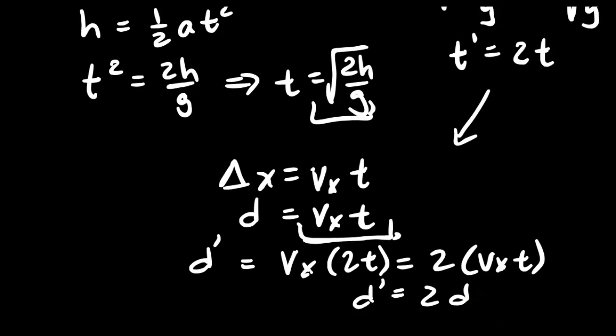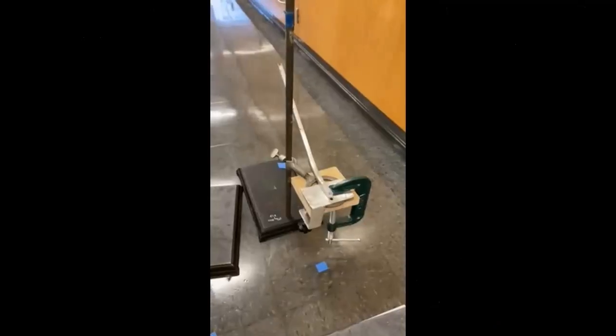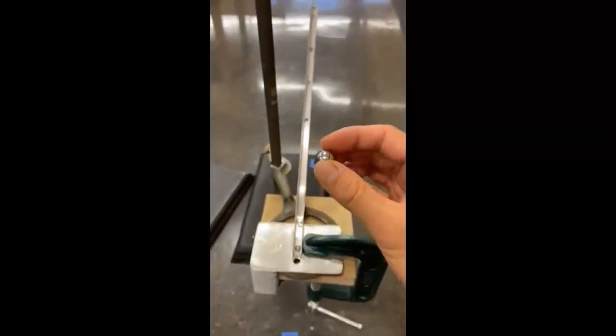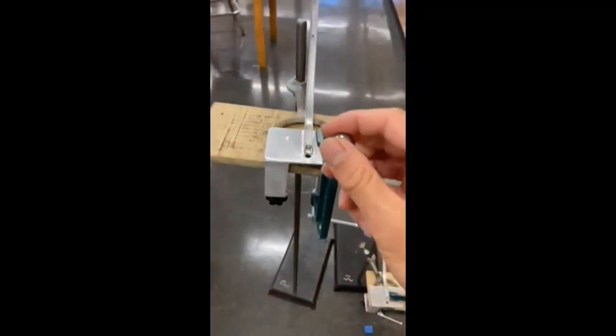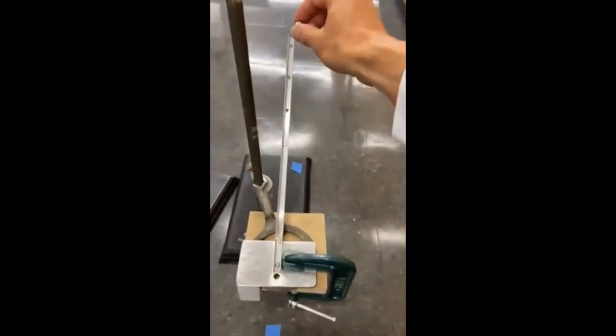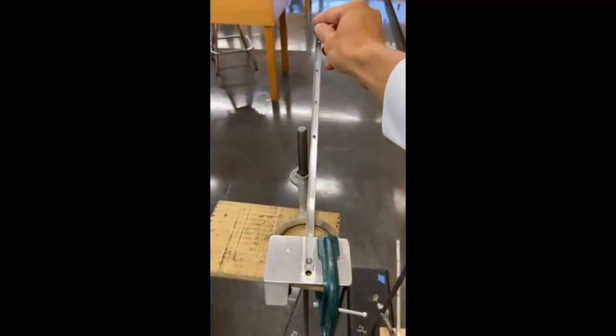Now I'm going to show you an experiment to verify this result. This is a projectile motion ramp with a steel ball. I'll roll it down the first ramp and mark where it lands using carbon paper on the ground. Then we'll compare it to the second ramp, which is 4 times as high, and use carbon paper to mark that landing spot as well and compare the two distances. Here goes the first roll, and now the second roll down the taller ramp.